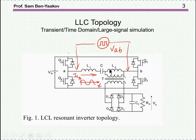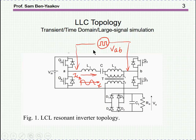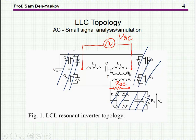By using two inductors, you can narrow the range of frequency needed to regulate the output voltage. This circuit can be analyzed for large signal, and can be simulated in the time domain or transient large signal by SPICE or any other simulator, to see the actual waveforms — the square wave, the sinusoidal waveform, etc. However, in many cases we would like to simulate the AC or small signal behavior of the circuit.